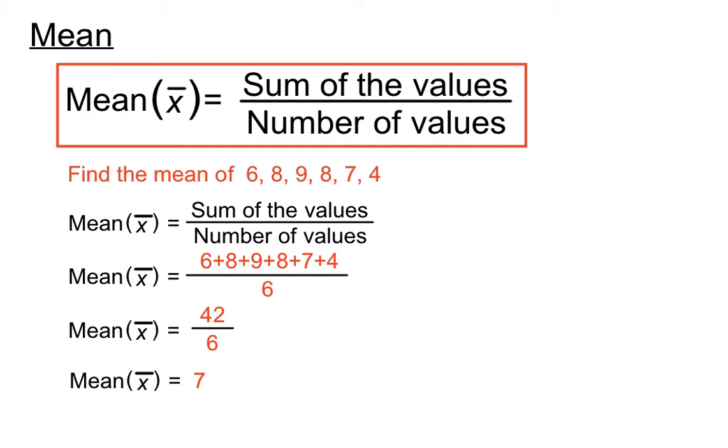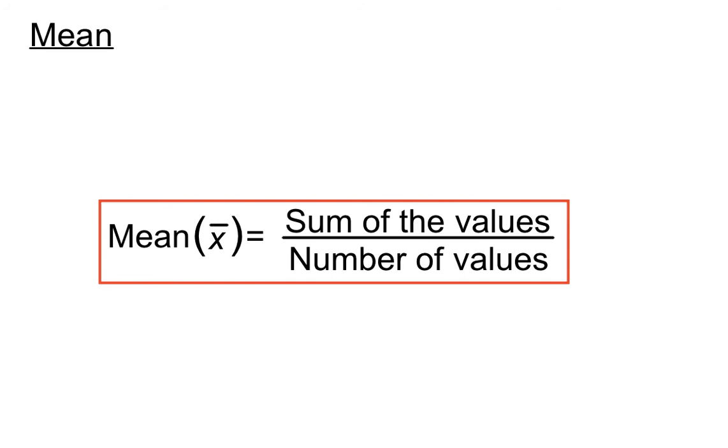So we added up the scores and divided by how many scores there were. That's how we find the mean: sum of the values divided by the number of values. Thanks for listening, see you next time.